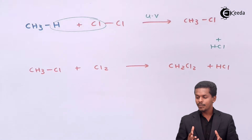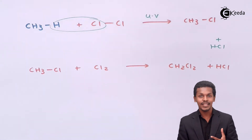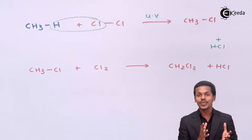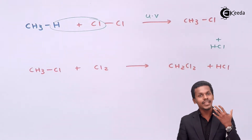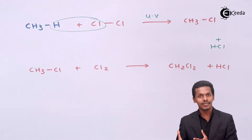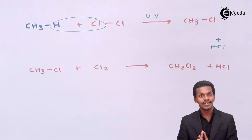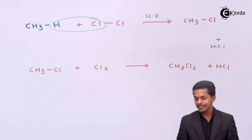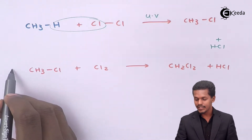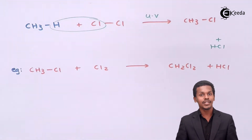Therefore, if you need to obtain a particular alkyl halide with only one halogen atom attached to the alkyl group — a mono-halogen derivative — chlorination under UV light is not preferred, as different methods must be used instead. Now let us talk about the next process: bromination.